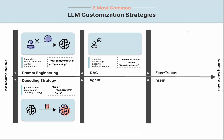A RAG system can be decomposed into retrieval and generation stages. The objective of the retrieval process is to find contents within the knowledge base that are closely related to the user query by chunking external knowledge, creating embeddings, indexing, and similarity search. First, chunking: documents are divided into smaller segments, with each segment containing a distinct unit of information. Second, create embeddings: an embedding model compresses each information chunk into a vector representation. The user query is also converted into its vector representation through the same vectorization process, so that the user query can be compared in the same dimensional space.